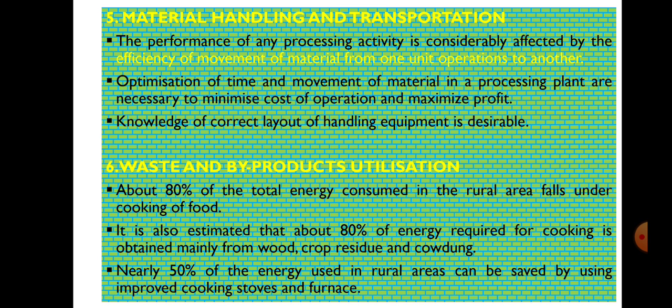The next and final class of post-harvest unit operations of agricultural commodities is Waste and By-products Utilization. About 80% of the total energy consumed in rural areas goes towards cooking of food. It is also estimated that about 80% of the energy required for cooking is obtained mainly from wood, crop residue, and cow dung. Nearly 50% of the energy used in rural areas can be saved by using improved cooking stoves and furnaces.